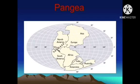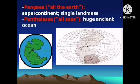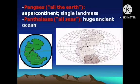Pangea means 'all the earth' or single land mass, and Panthalassa means 'all seas' or huge ocean. Wegener searched for evidence to support his claim. He noticed the fit of the edges of the continents on the opposite sides of the South Atlantic. His evidence for the continental drift theory includes the distribution of fossils in different continents, rock features, and ancient climates.